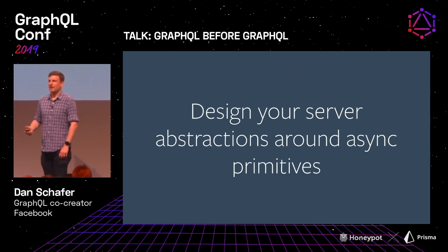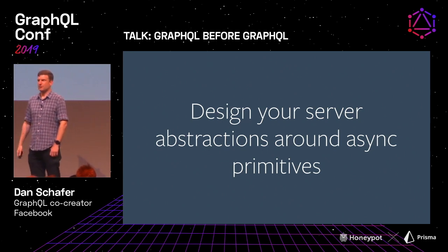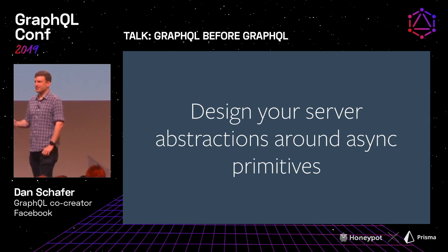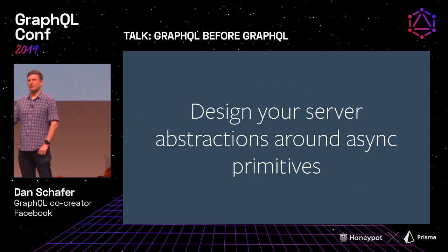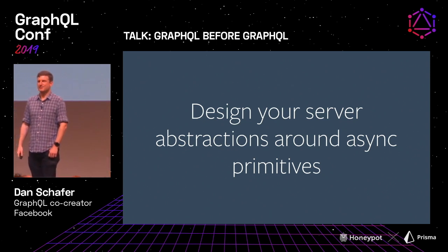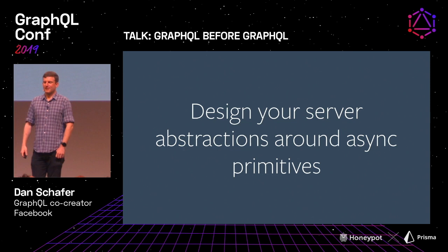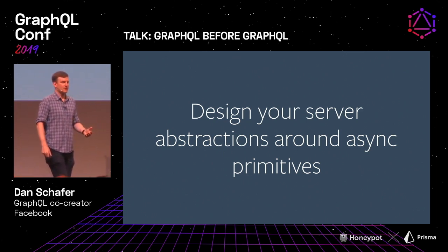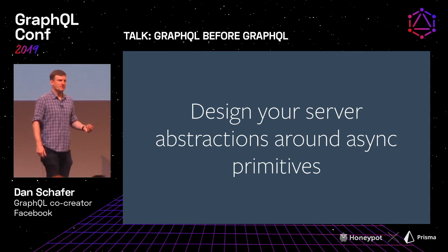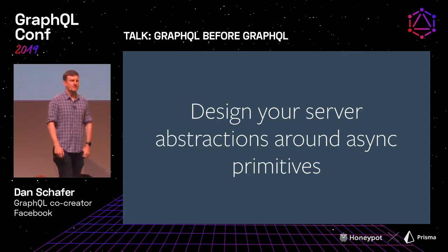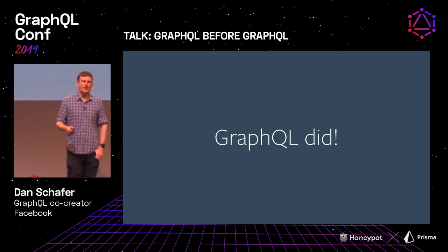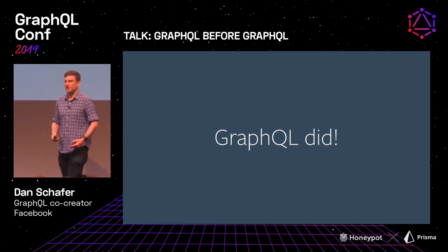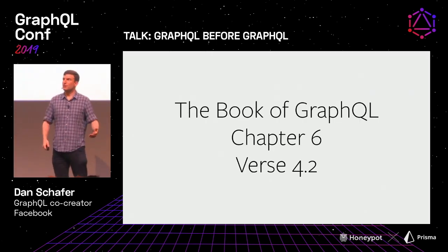This is a lesson I took away: you really want to design your server abstractions around async primitives. Anytime you design around sync primitives and someone decides they need to make it async in the future — which they will — that's really hard. It's a lot easier to call synchronous code from asynchronous code than vice versa. If it can ever be async, make it async. And when I say design server abstractions around async primitives, I'm talking from experience because GraphQL did.